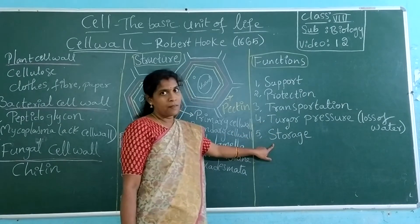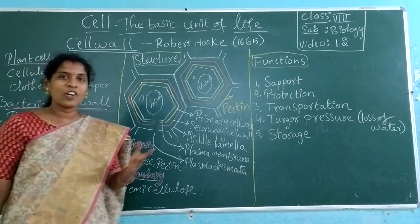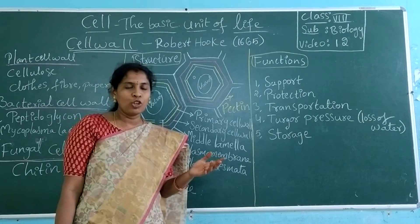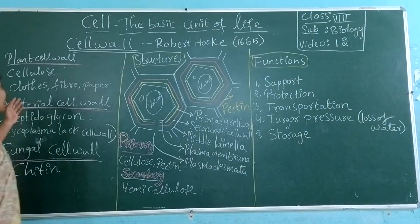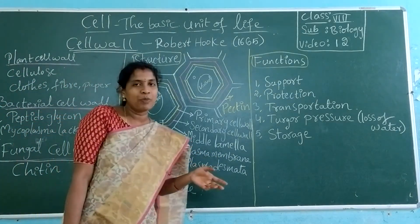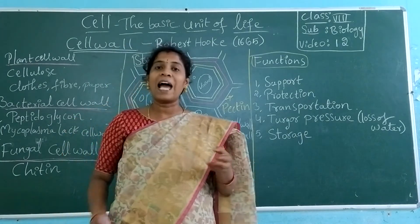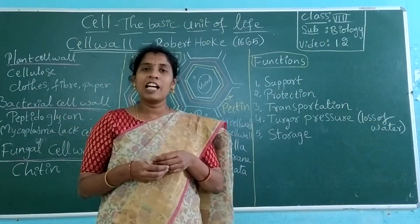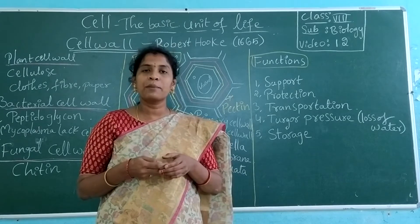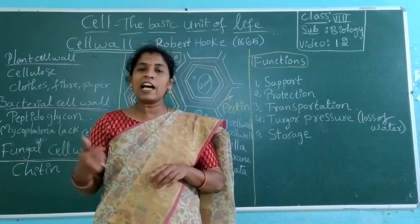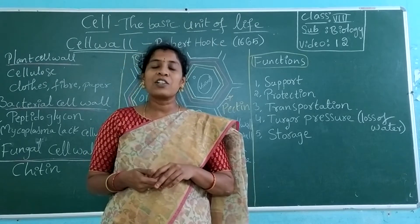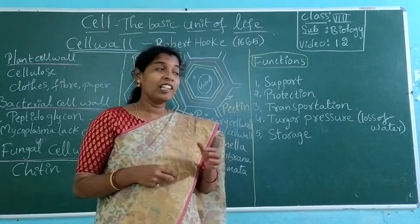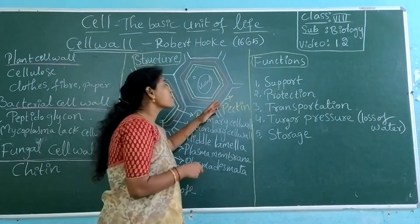The cell wall also provides storage. Generally, the cell wall stores carbohydrates — cellulose. That cellulose is used to make fibers and paper, and for different purposes. Even we consume cellulose in our regular diet in plant products like vegetables and fruits. Even animals like ruminants take grass, and the grass has cellulose.